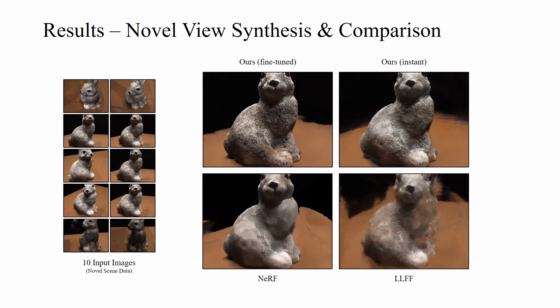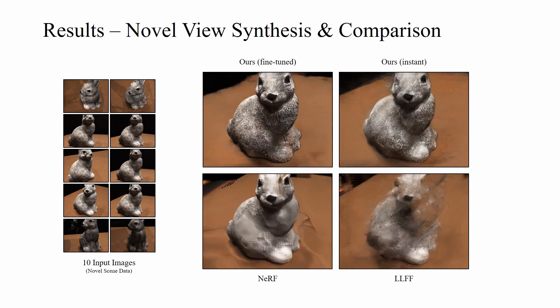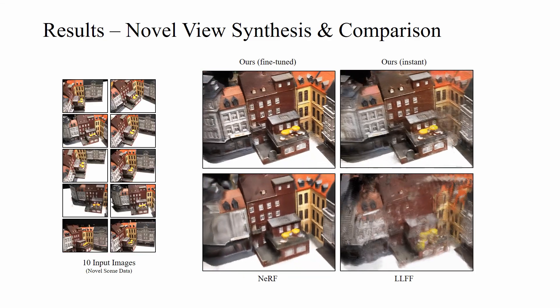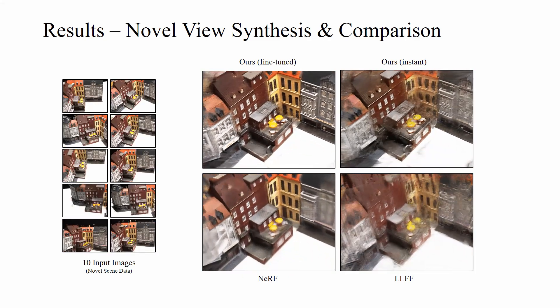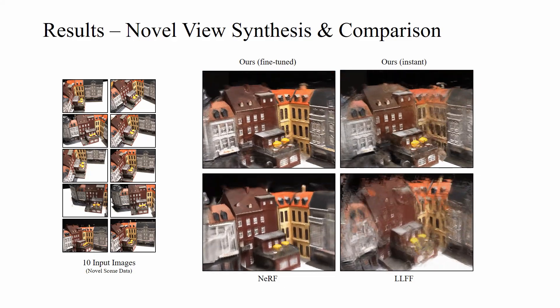Next, we present further results. Note how details of the blue house are captured by our method. Also, small objects on the balcony are captured by Stereo Radiance Fields.